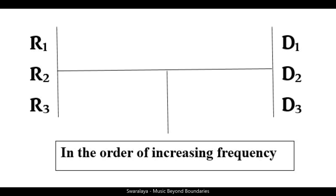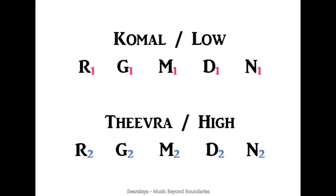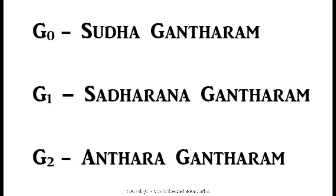Here comes the confusion about how to number the notes. So far the numbering has been in the order of increasing frequencies, meaning Ri 1, Ri 2, Ri 3 are the next notes in order of their increasing frequencies. Now for Shuddha Gaantaram, I personally give it a number Ga 0. In most books the numbering is taken as Ga 1, Ga 2, and Ga 3 for Shuddha, Shadarana, and Antara Gaantaram respectively, but this changes the numbering we already followed. To keep it simple, Ga 0 is Shuddha Gaantaram, Ga 1 is Shadarana Gaantaram, and Ga 2 is Antara Gaantaram, in order of increasing frequency.